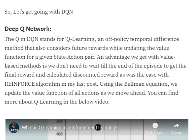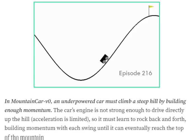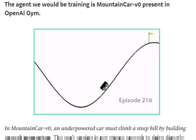DQNs estimate Q-values for a given state-action pair, and using those we determine which action to take. Now coming to our present topic, we will be training an environment from OpenAI Gym called the mountain car. There is a car that needs to reach the top of a hill where a flag is placed. The acceleration is limited, so it can't climb directly. Instead, it needs to rock back and forth to generate momentum and eventually reach the flag.